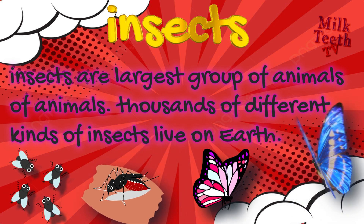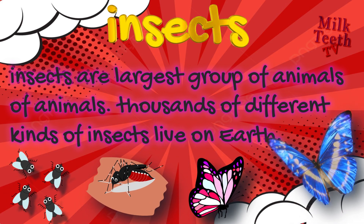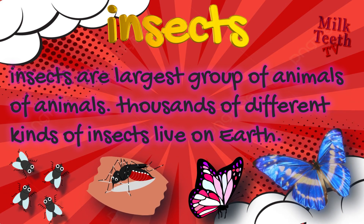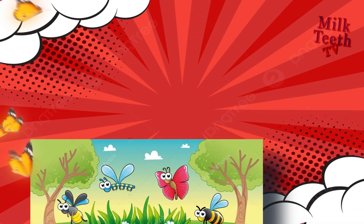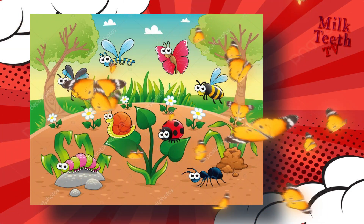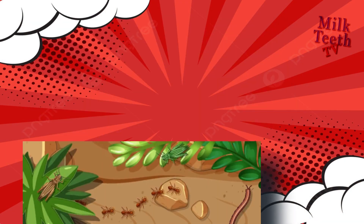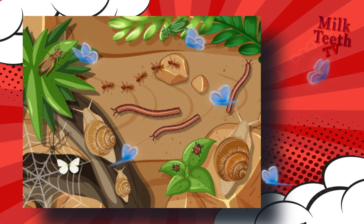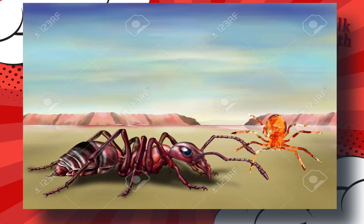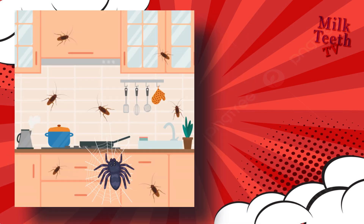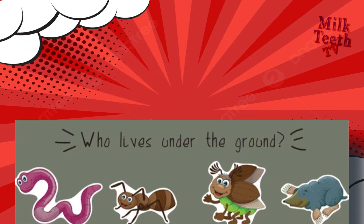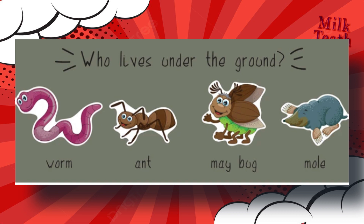Insects are the largest group of animals. Thousands of different kinds of insects live on Earth. You can find them everywhere around — in forests, in the soil, in deserts, in gardens, and even in our homes. Insects even live underground.